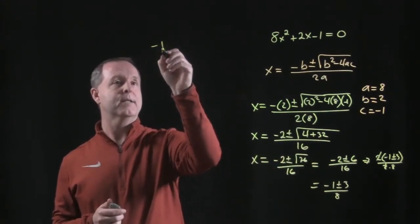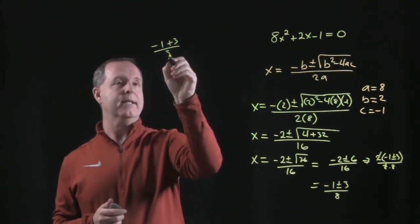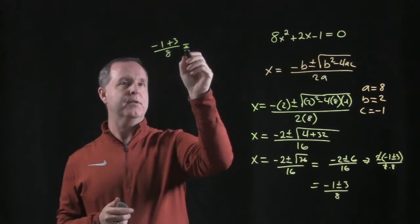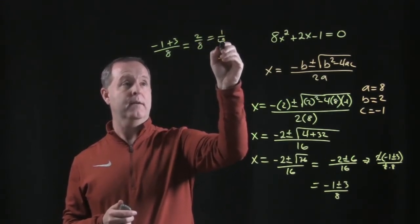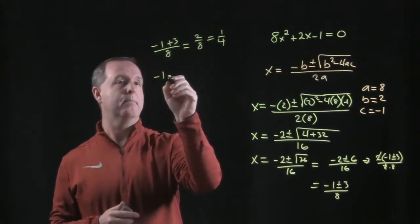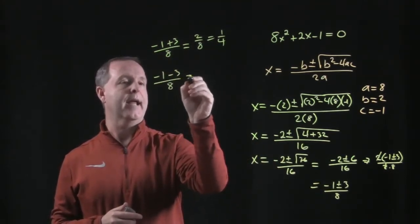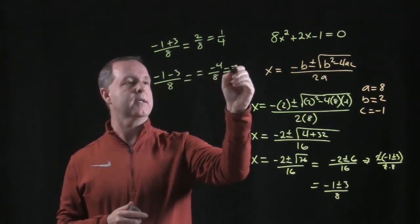So the first one is a minus 1, plus a 3, all over an 8. And that produces a 2 over an 8, or a 1 fourth. So that's one solution. The other one is the minus 1, minus a 3, over an 8. And that equals a negative 4 over an 8, equals a negative 1 half.